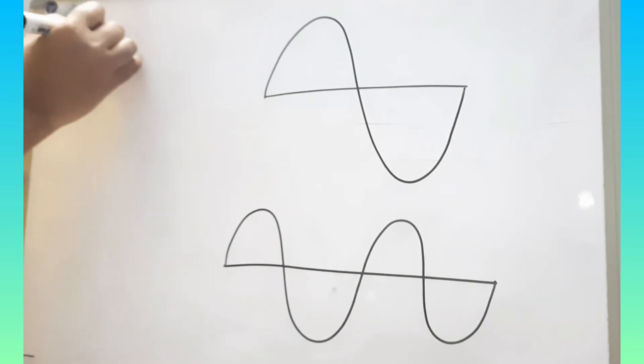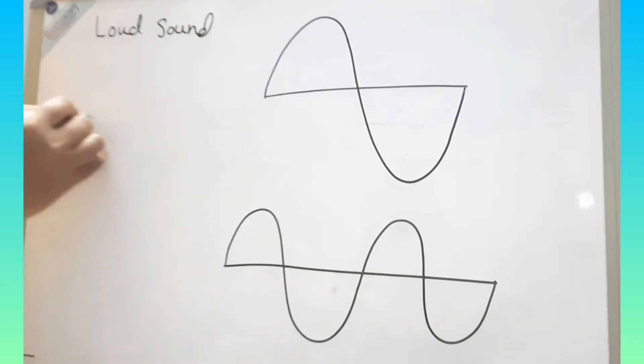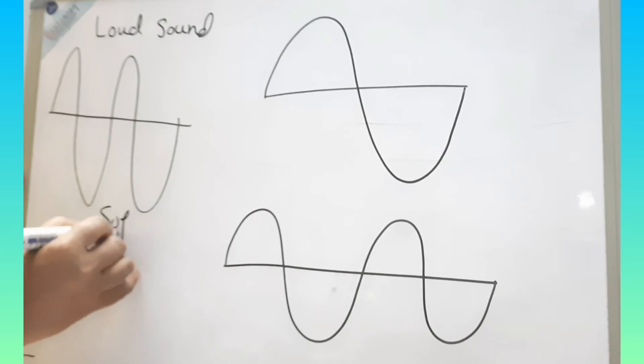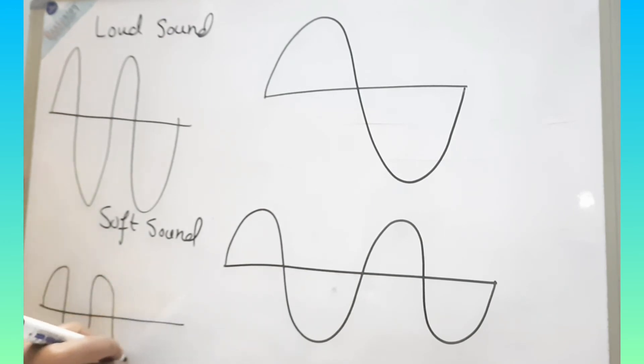Now I will draw sound wave for loud sound and soft sound. So first we will see loud sound. For loud sound, the amplitude will be higher. And for soft sound, the amplitude will be lower.